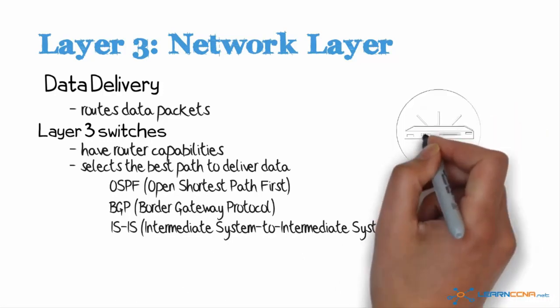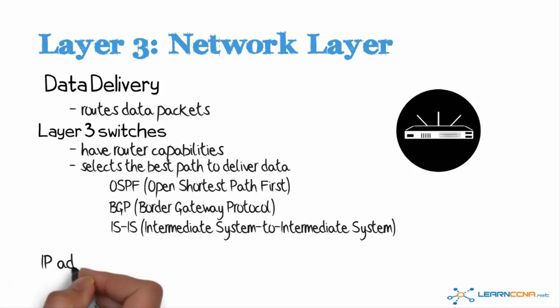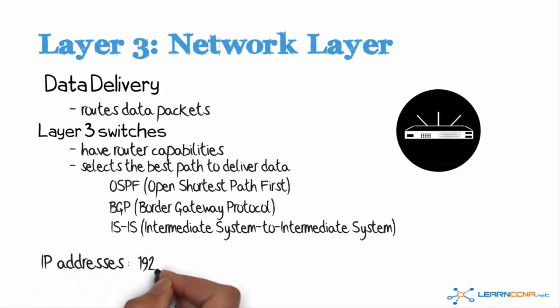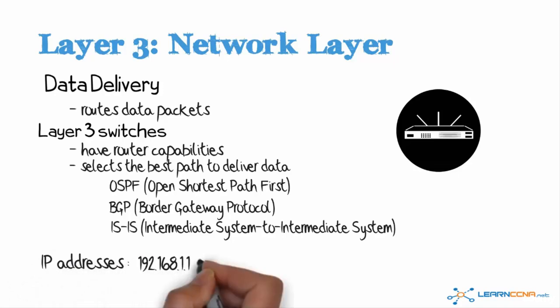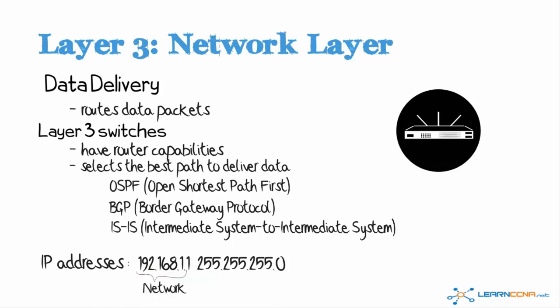In an IPv4 network, we have addresses such as 192.168.1.1, with a network mask of 255.255.255.0. The network mask informs devices that, in this example, the first three octets are network, and that's what routing decisions are made on. Please refer to the IP addressing videos for more detail about the network and host portions of an IP address.